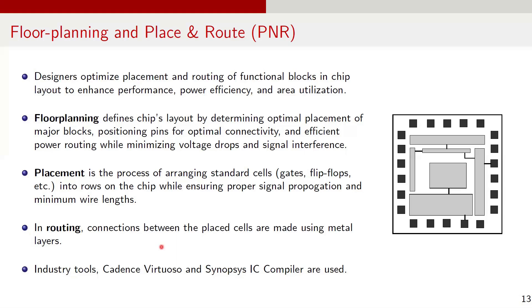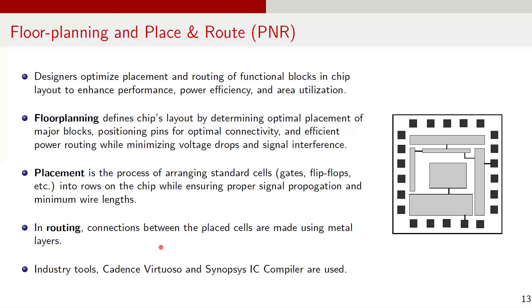Placement is the process of arranging standard cells, for example, logic gates and flip-flops, into rows on the chip. A poor placement can lead to a larger chip area and degrade the overall performance of the IC. Factors that must be considered during placement include minimizing wire length to reduce delays and power consumption, and efficient placement to optimize power usage and heat distribution. Routing is the step where connections between the placed cells are made, typically using metal layers. This step also ensures that the clock signal reaches all components in a balanced way, minimizing skew and delays. Once placement and routing are completed, a GDS2 file is generated, which represents the final physical layout of the chip.